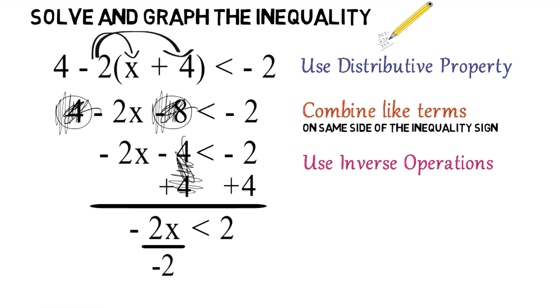Again, we want to use inverse operations, so we're going to divide by negative 2 to both sides of the equation. Negative 2 divided by negative 2 cancels out. 2 divided by negative 2 gives you negative 1.